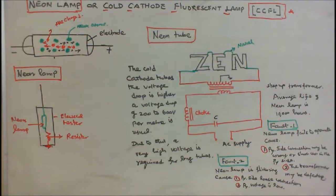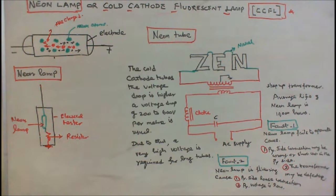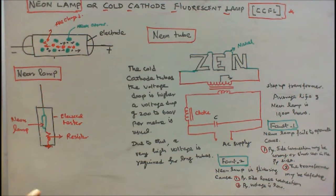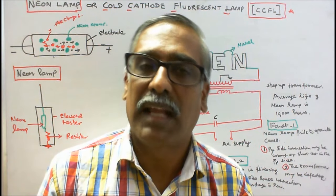Now we will see the types of faults. Fault 1: Neon lamp fails to operate. Causes: number one, primary side connection may be wrong or there may be a short circuit in the primary side; number two, the transformer may be defective. Fault 2: Neon lamp is flickering. Causes: number one, primary side loose connection; number two, primary voltage is very low. This is a common fault that occurs in the neon lamp. With this I conclude my lecture. Thanks for listening.